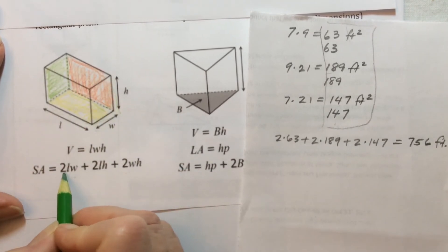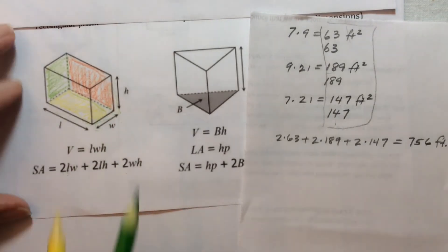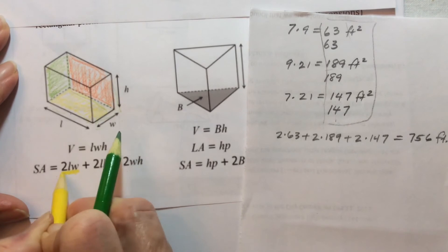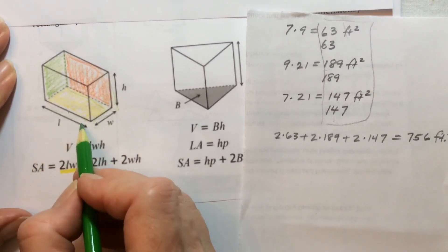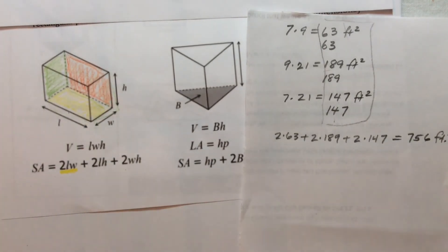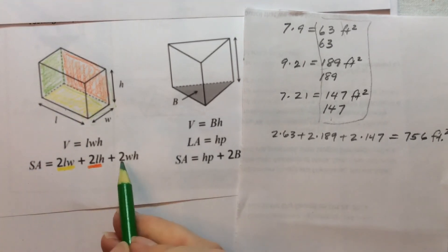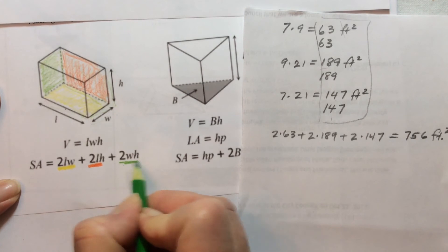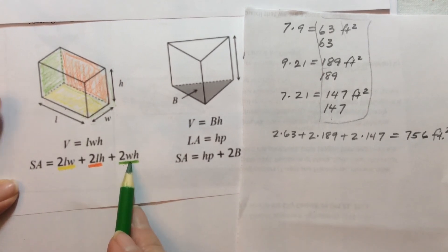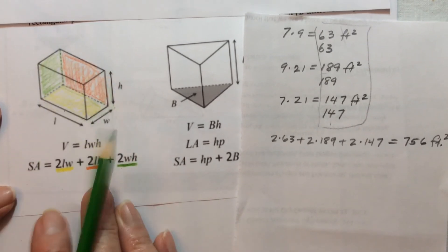So the length times the width here, let's color code these so we don't get it mixed up, is this one. The length times the height is the orange one, so that's this one. And then the width times the height, which is the green one. So there are two of each of those. So you add those surface areas up and you get the surface area for a rectangular prism.